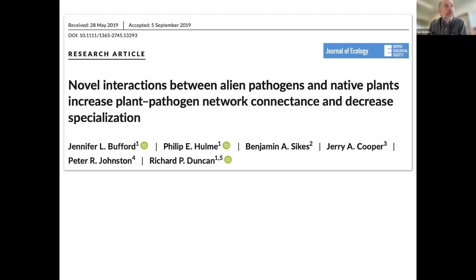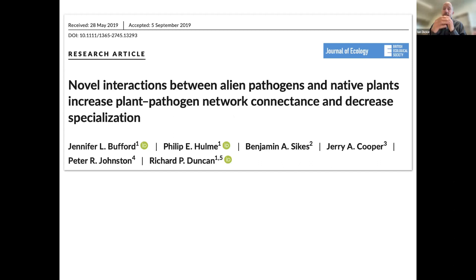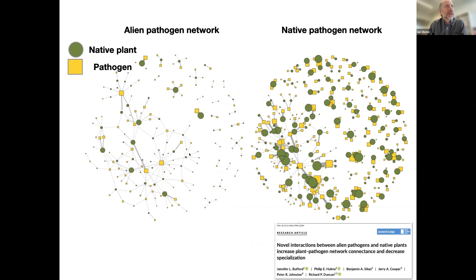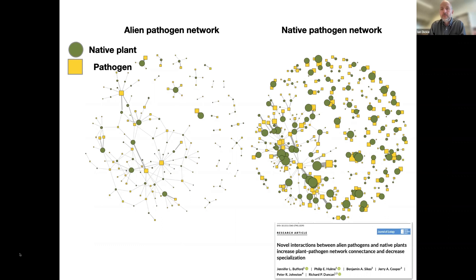Now I'll briefly talk about a study by colleagues Jennifer Buffard and Phil Hume. They wanted to look at networks more broadly, so they used pre-existing collection data from databases of all fungal-plant interactions known in New Zealand, viewed from a pathogen standpoint. These network diagrams are pretty but hard to interpret: on the left is the alien pathogen network, on the right the native pathogens. The main finding was that the alien pathogen network showed very low levels of specificity — very generalist pathogens — and very low levels of modularity. You didn't see tight clusters of plants linked by pathogens; instead it was a broad interconnected network, much more general than in the native pathogen network.